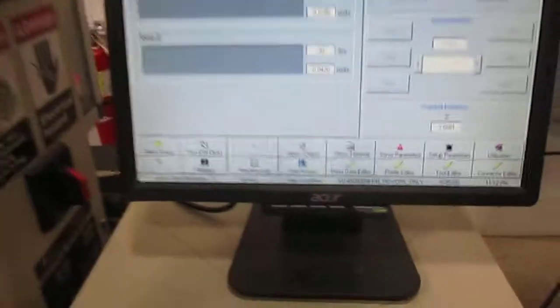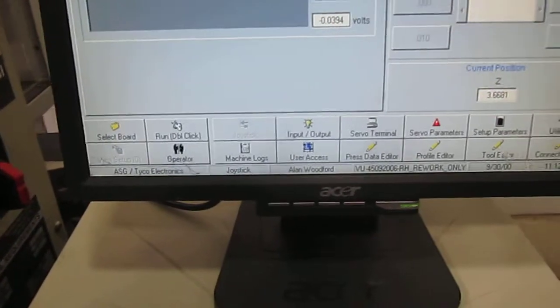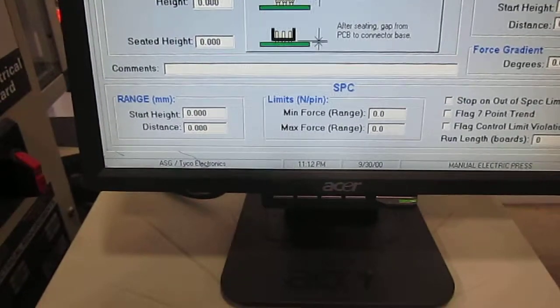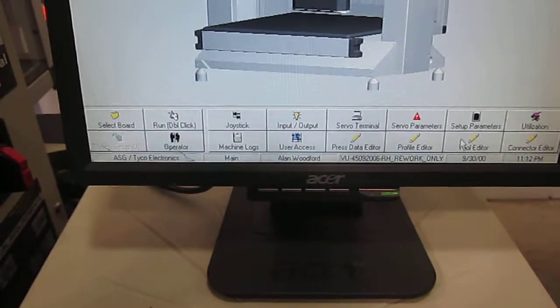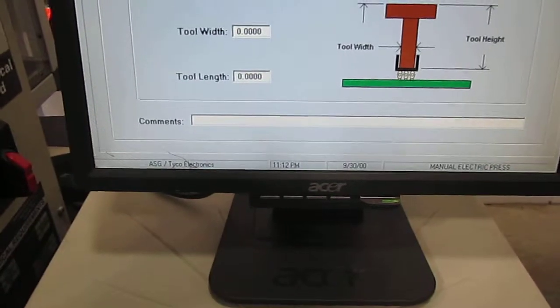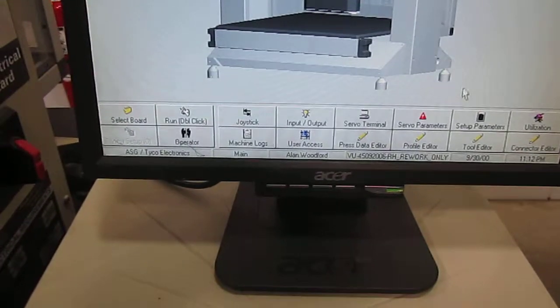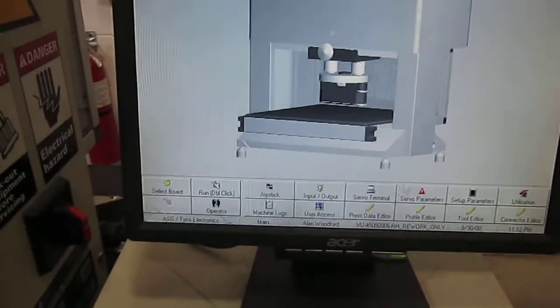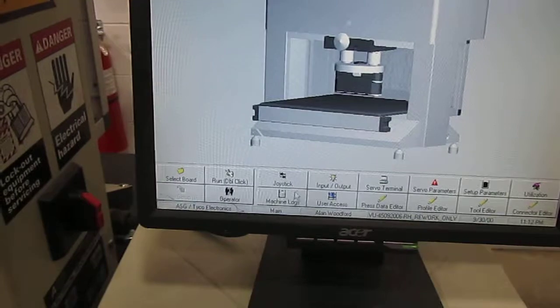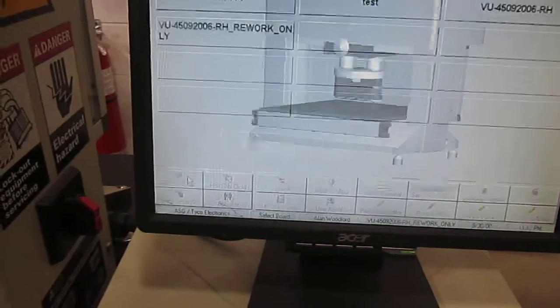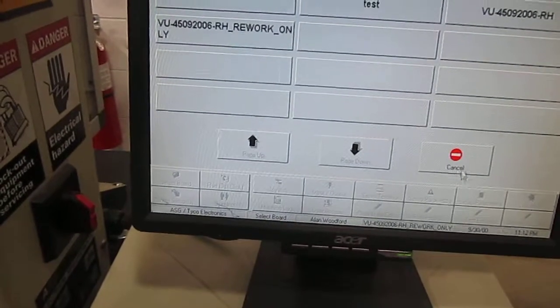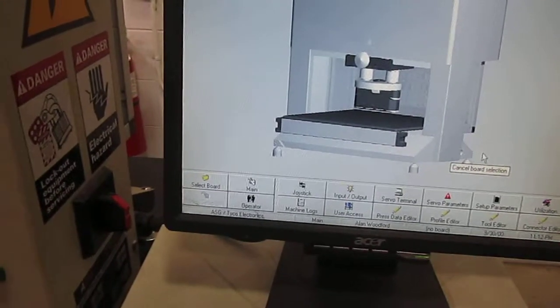And that's about it. I'm going to go through some of these tabs just to see if everything is working quickly. Here's the connector editor, the tool editor, some types of tools, parameters. You can switch them. You can select your boards. These are boards that were in here before. And that's about it.